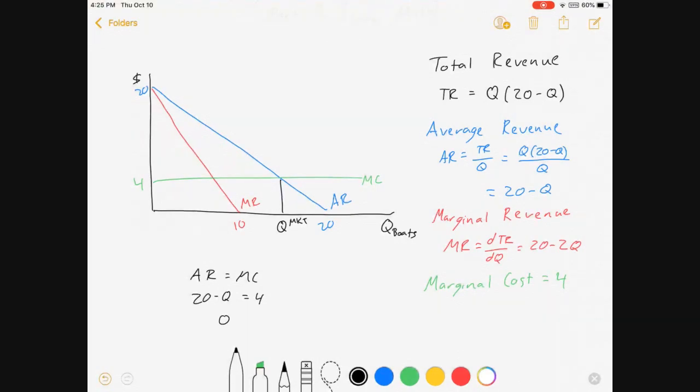And from that, you're going to get Q equals 16.